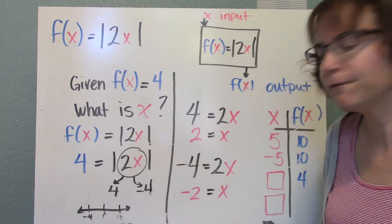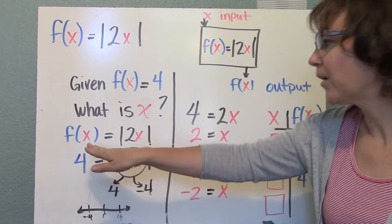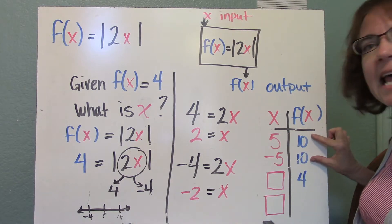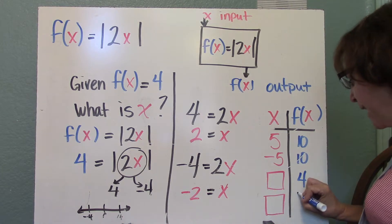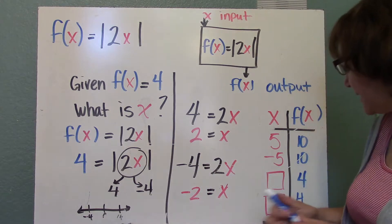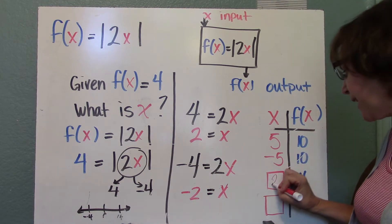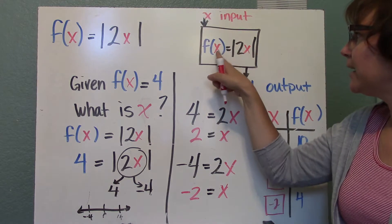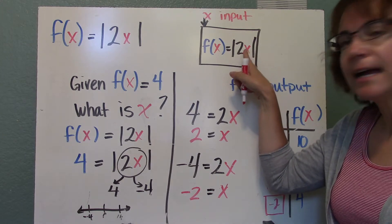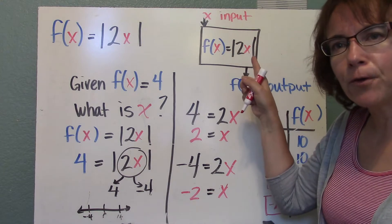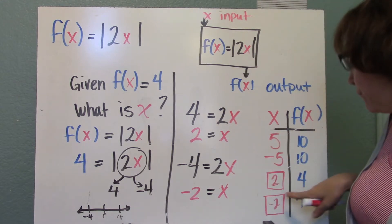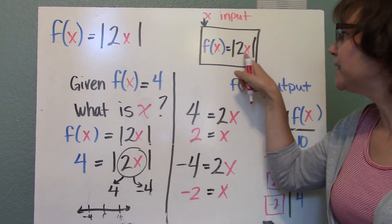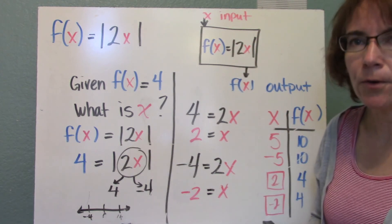So x can be two different values — our input can be 2 or negative 2 to give us the output of 4. That matches what we learned earlier: inputs of 5 and negative 5 both gave an output of 10. Here, x equals 2 or x equals negative 2 both give an output of 4. We can verify: if input is 2, then 2 times 2 is 4, and the absolute value of 4 is 4. If input is negative 2, then 2 times negative 2 is negative 4, and the absolute value of negative 4 is also 4.